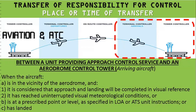Transfer of responsibility from the terminal controller to the tower controller for an arriving aircraft about to land: when the aircraft is in the vicinity of the aerodrome and it is considered that the approach and landing will be completed in visual reference with the ground, it is released to the aerodrome control tower. Alternatively, once the aircraft has reached uninterrupted VMC conditions, or as per a letter of agreement or ATS unit instructions at a specified point or level, or after landing, the arriving aircraft is released to the aerodrome control tower.